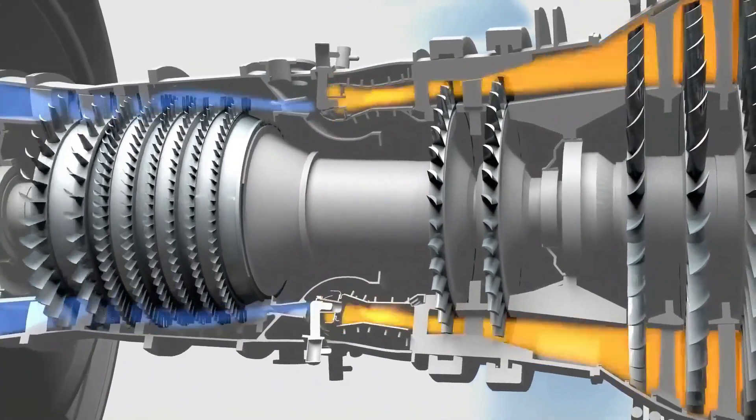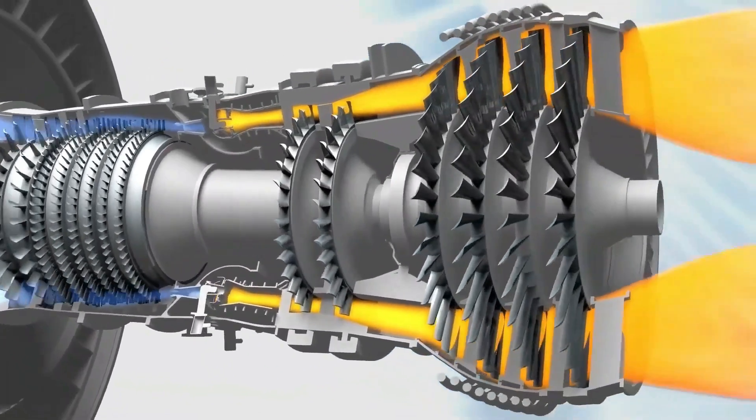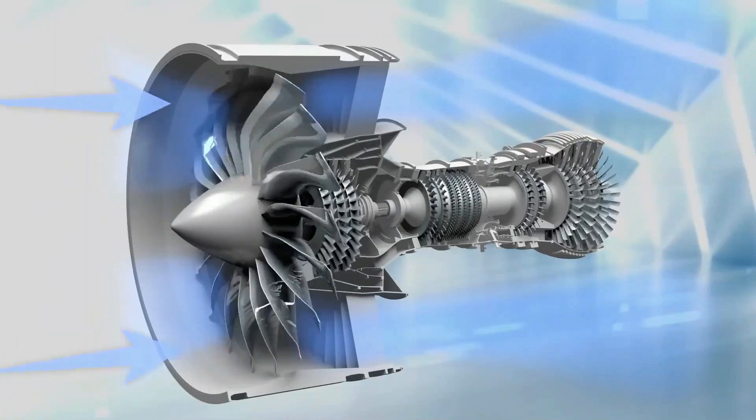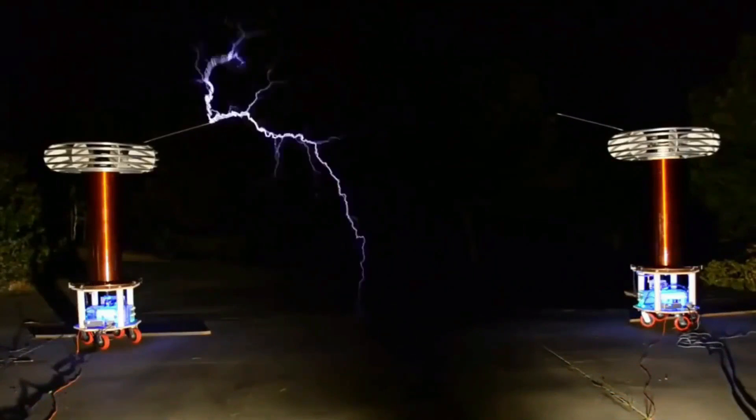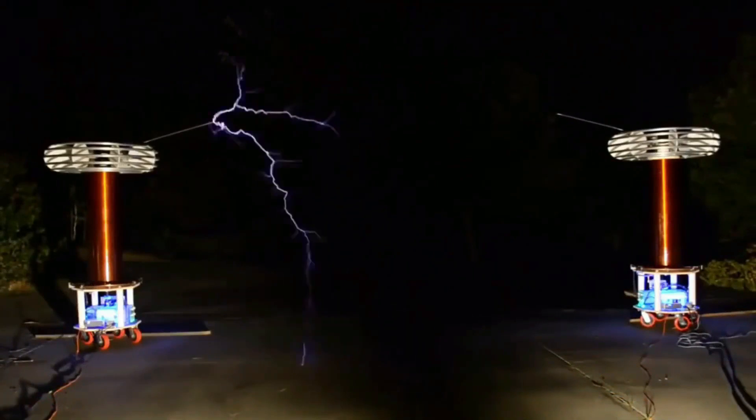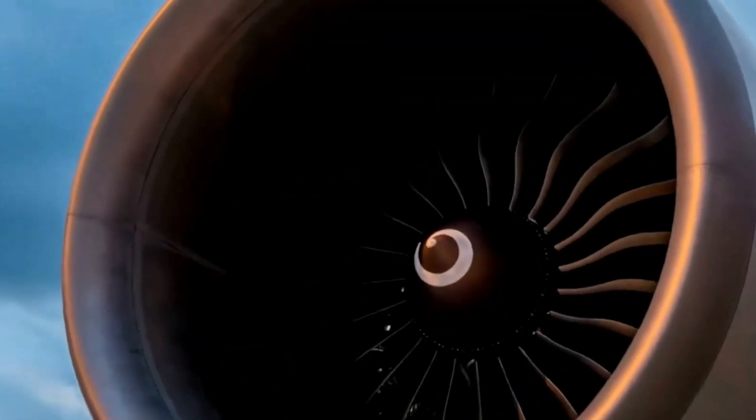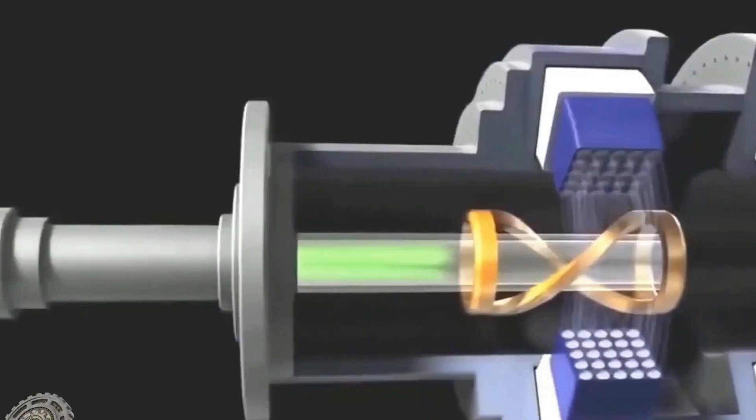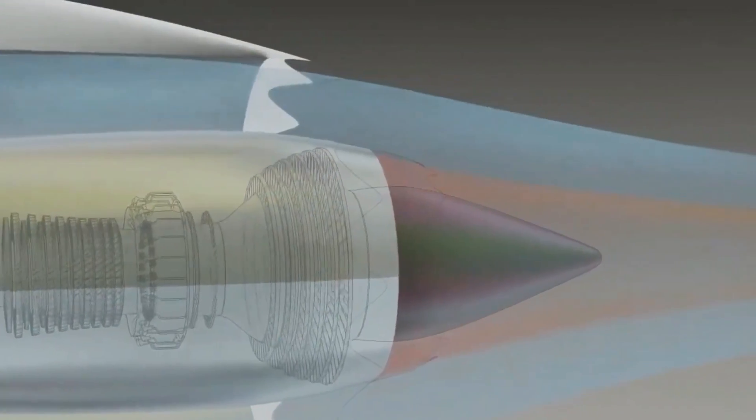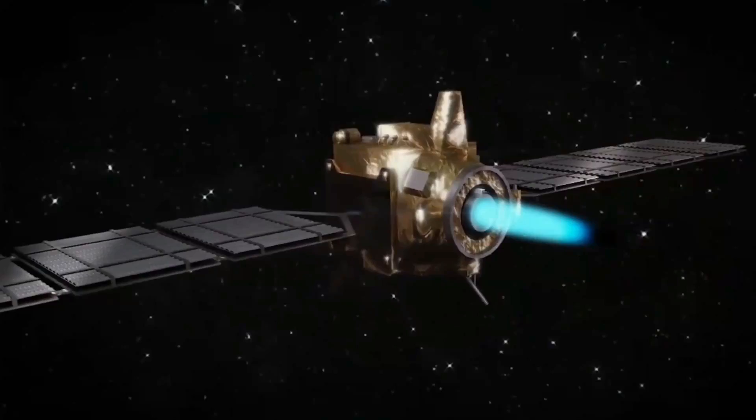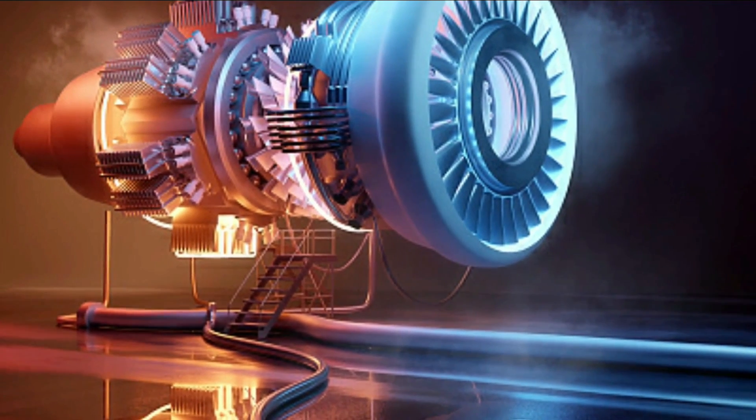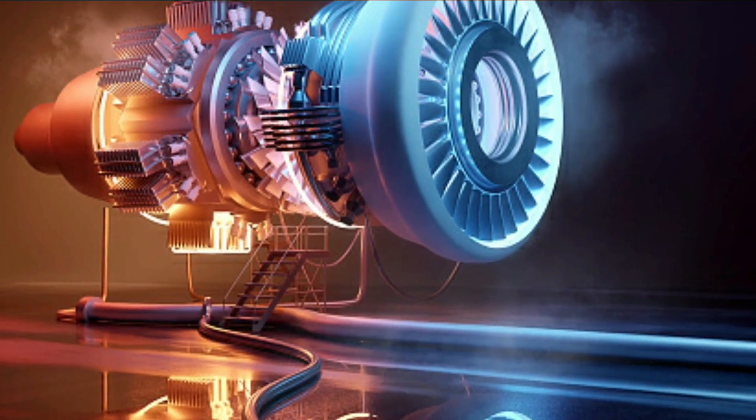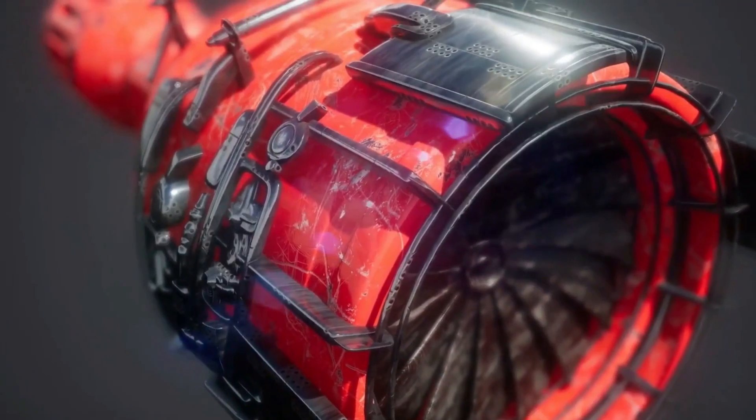Unlike ion thrusters, which rely on pulling ions from a plasma source and then accelerating them using specialized grids or anodes, plasma engines take a different route. They harness the power of the electric arc formed between two electrodes to give these ions a boost. This approach may result in slightly lower exhaust speeds due to voltage limitations, but here's the kicker. When you're in the vacuum of space, speed isn't everything. Steady acceleration over the course of months or even years can ultimately achieve remarkable velocities.